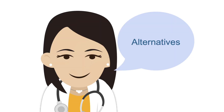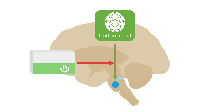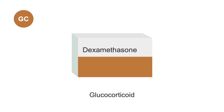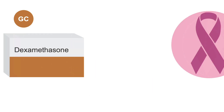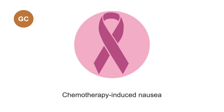Now we get into other medications that are not primarily used as anti-emetics, but are nice alternatives when you need additional control. All of these are centrally acting via unknown or complex mechanisms. Glucocorticoids are the first; the most commonly used drug here is dexamethasone, which is used as an adjunct anti-emetic for chemotherapy-induced nausea and vomiting.